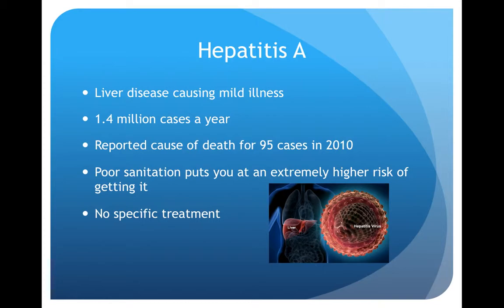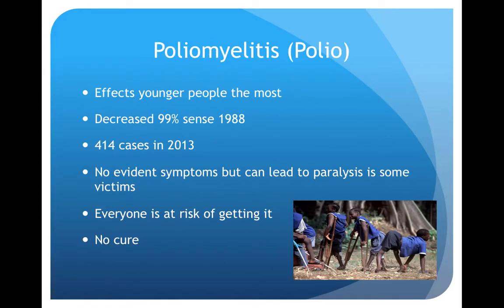Hepatitis A is a liver disease, and it's relatively mild. There are 1.4 million cases a year, and there were 95 cases in 2010 in the U.S. There's no specific treatment for it, and it's one of the more mild waterborne illnesses.